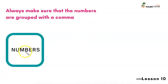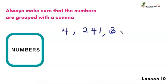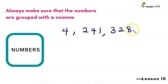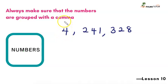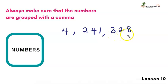We have 4,241,328. So we start from the left as usual. After the hundreds, tens, and units, this group is thousands, and then followed by millions. How many do we have in the millions? Just a single four million. Two hundred and forty-one thousand. Three hundred and twenty-eight.